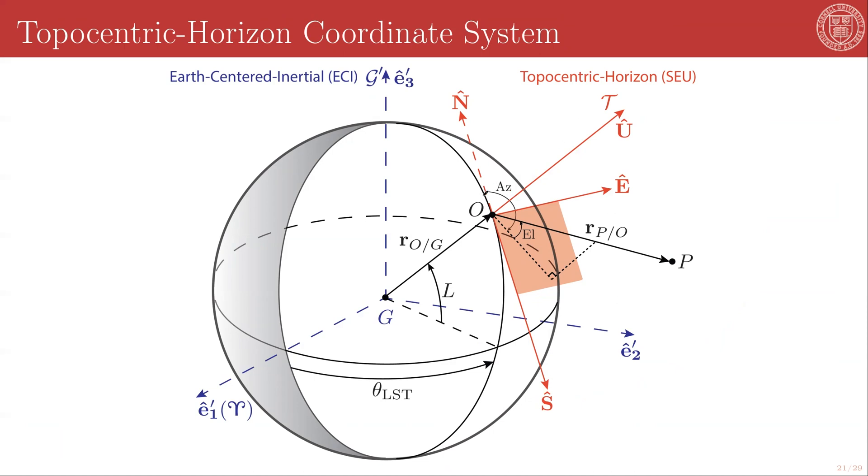The azimuth, slightly confusingly, is measured in the SE plane, but from north. So a zero azimuth is something pointing north or negative south. The elevation then is measured up from the SE plane to whatever radius you're measuring. The conversion between the SEU frame and the G prime frame, which you will recall in our nomenclature is an Earth-centered inertial frame, and the prime means that it is equatorial, is given by another set of two spherical angles.